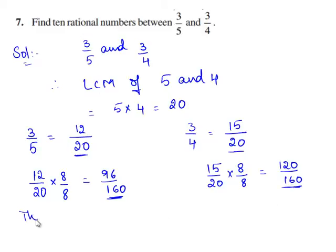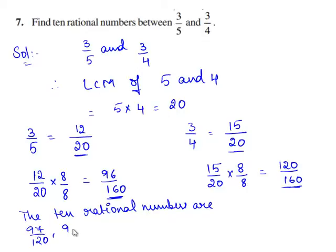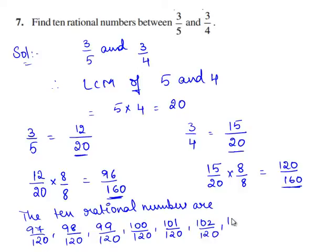The 10 rational numbers are: 97 by 160, 98 by 160, 99 by 160, 100 by 160, 101 by 160, 102 by 160, 103 by 160, 104 by 160, 105 by 160, and 106 by 160.